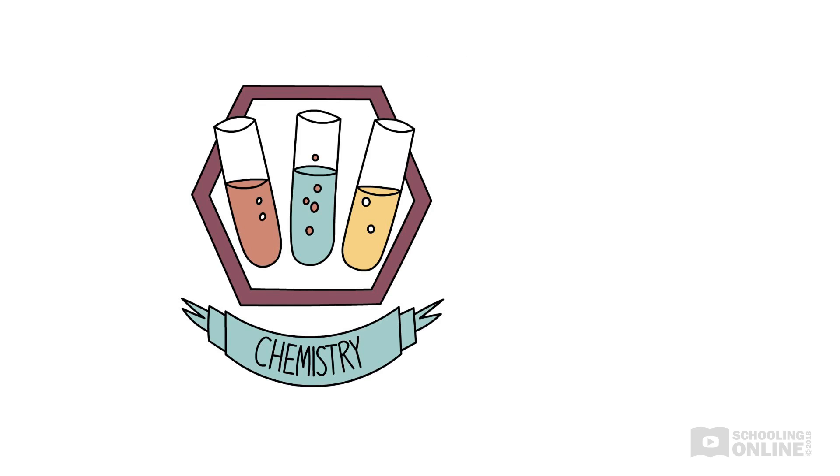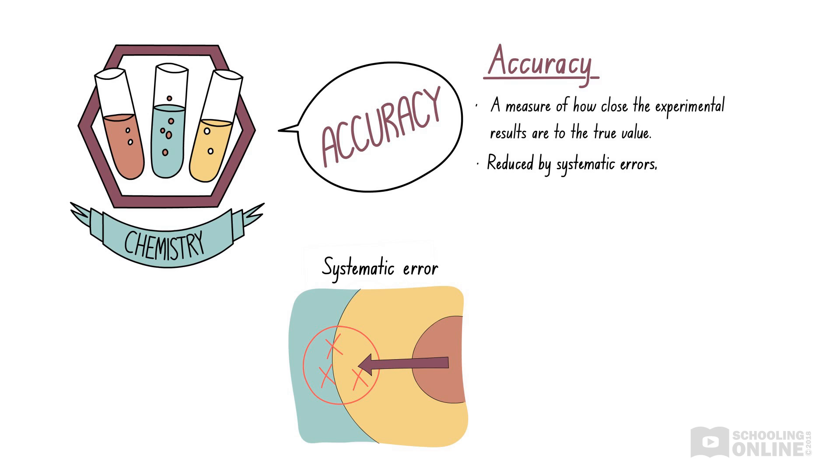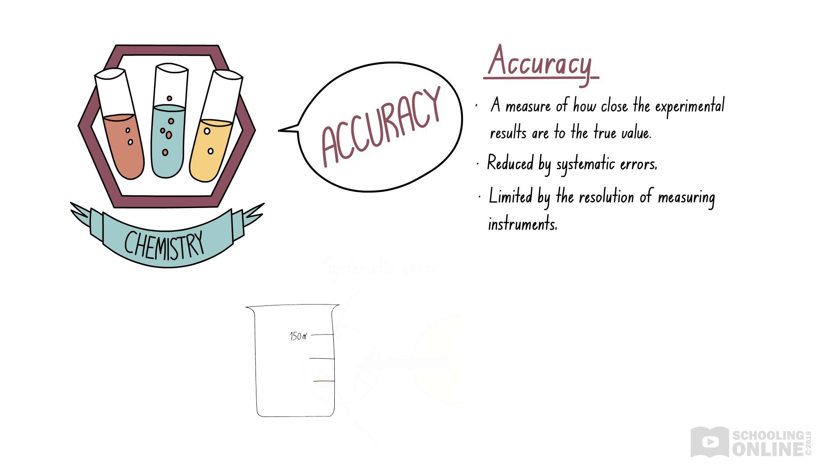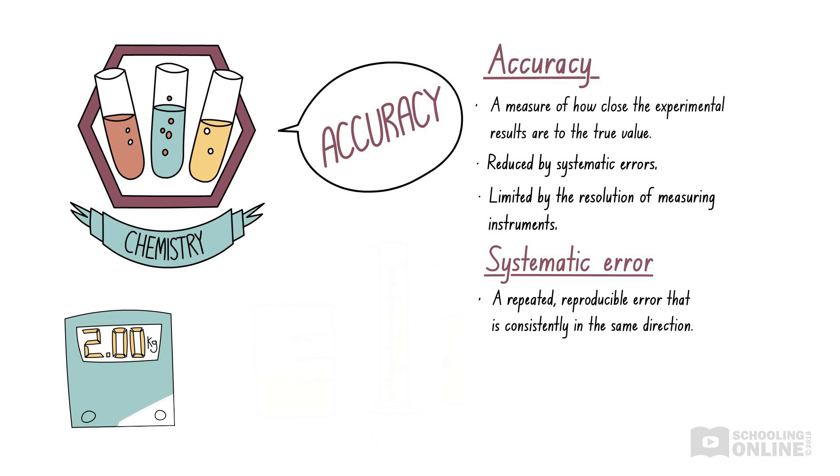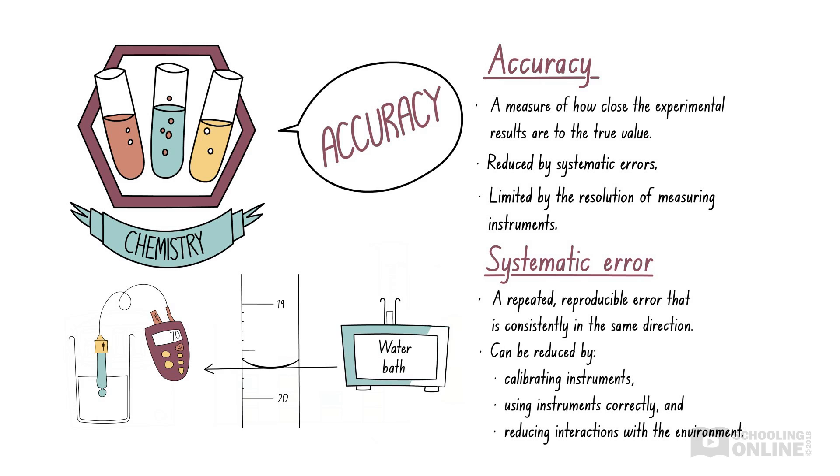Let's revise what we've discussed in this video. Accuracy is a measure of how close the experimental results are to the true value. Accuracy can be reduced by systematic errors. Accuracy is also limited by the resolution of instruments, which depends on the increments of your measuring device. Systematic errors are repeated, reproducible errors that are consistently in the same direction. We can reduce systematic errors by ensuring that we calibrate our measuring instruments, use the instruments correctly, and minimize any interactions with the environment.